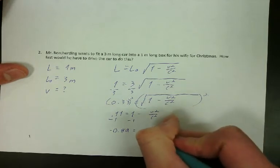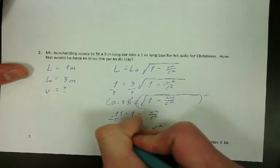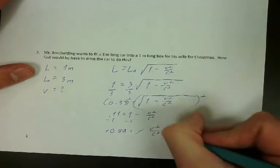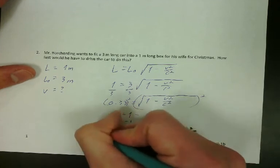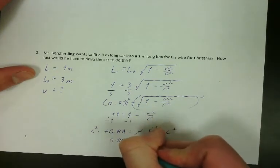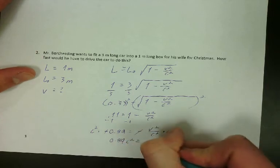I'm going to go ahead and drop that negative sign because it's on both sides, so if I divided both sides by negative 1, it would cancel those negatives out. At this point, I'm going to multiply C squared to both sides. I'm leaving it as C squared, so that gives me 0.89 C squared equals V squared.